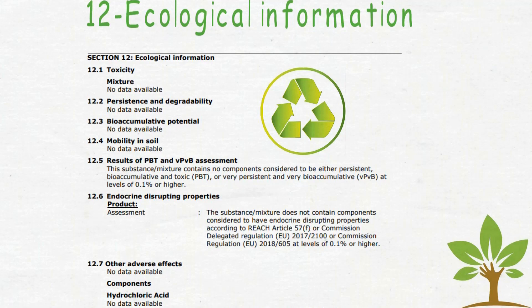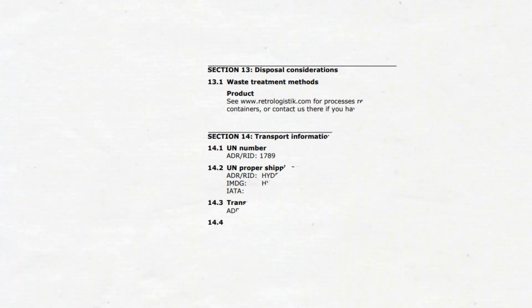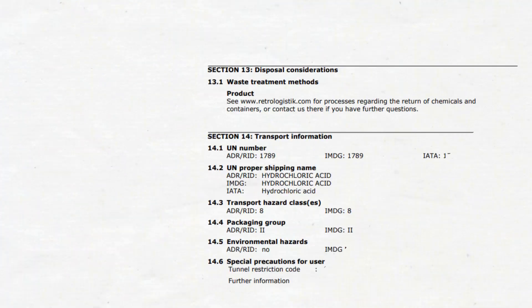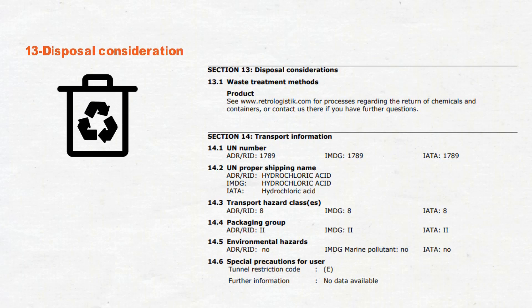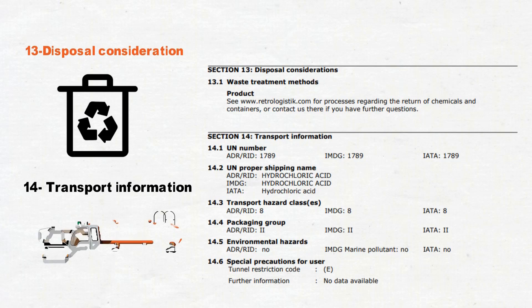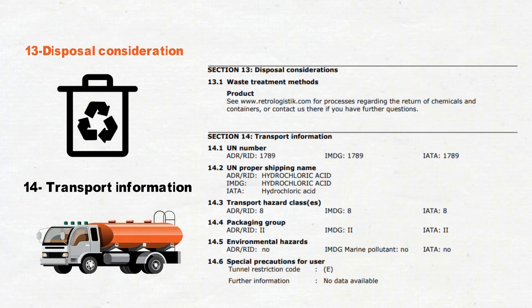Section number 13 is about Disposal Considerations — most likely advice on the best waste treatment method. Section number 14 is Transportation Information. You will find the UN number, the UN shipping name, the transport hazard class, and any special precautions you need to follow when transporting such materials.